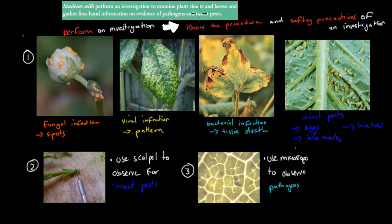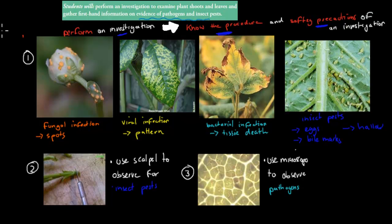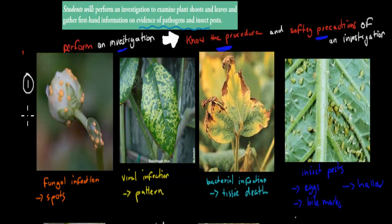The next dot point involves performing an investigation to examine plant shoots and leaves and gather firsthand information on evidence of pathogens and insect pests. 'Performing an investigation' means you need to know the procedure and the safety precautions. You examine the evidence of pathogens and insect pests by looking at leaves — either given as pictures or actual samples, or you went out and collected them. You examined those samples for any evidence. For example, spotty infections are often fungal infections — that would be evidence of a pathogen.